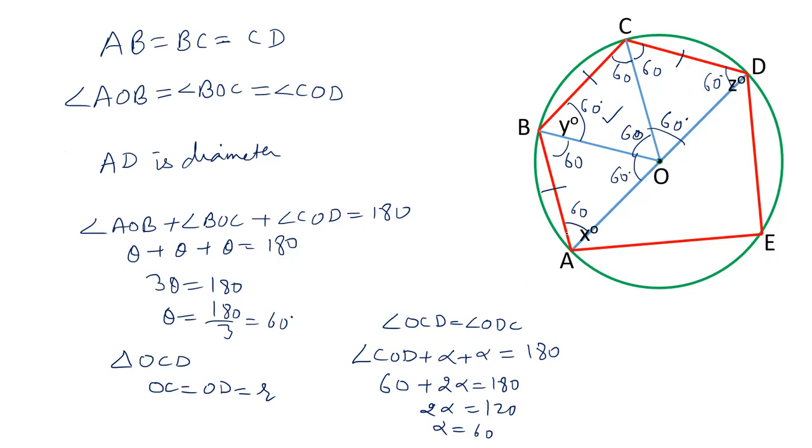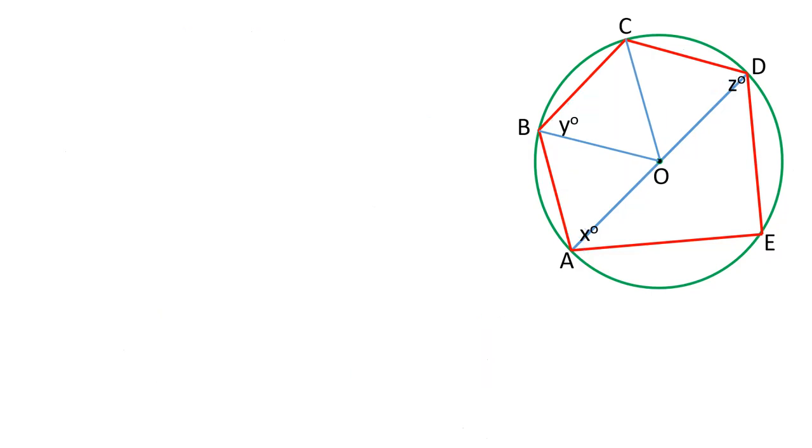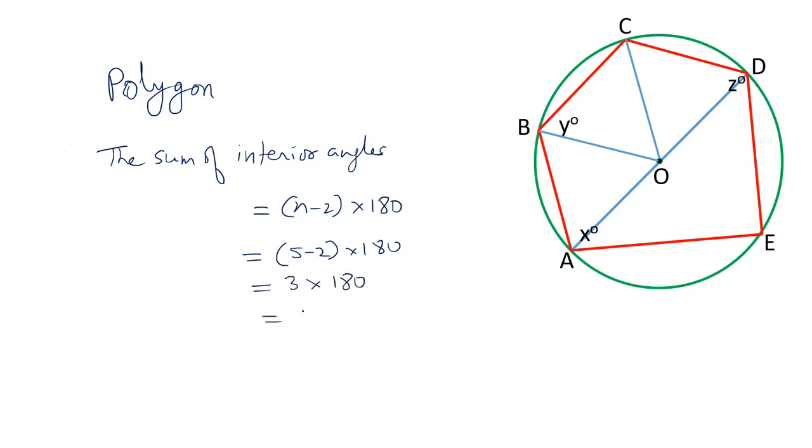We have to find the value of angle X plus angle Y plus angle Z which is angle A, angle B, angle D. Now let us try to understand one more property of pentagon or polygon. In a polygon, the sum of interior angles is equal to N minus 2 into 180. So in pentagon ABCDE, the sum of its interior angles will be 5 minus 2 into 180, that is 3 into 180, 540 degrees.